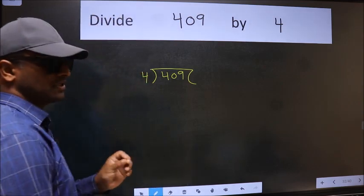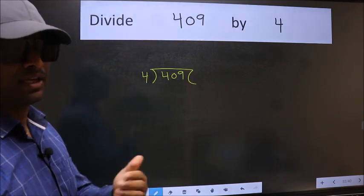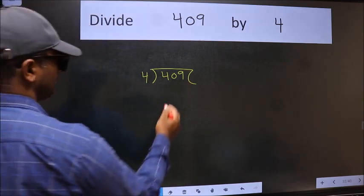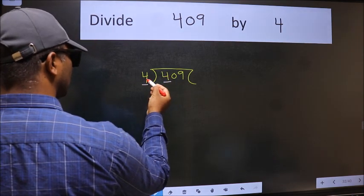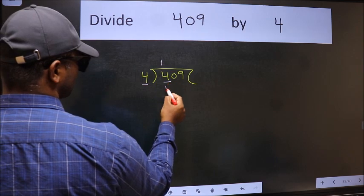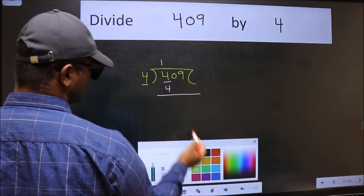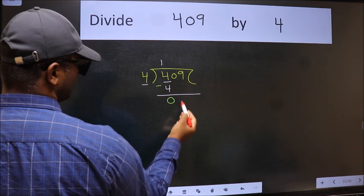This is your step 1. Next, here we have 4, here also 4. When do we get 4 in 4 table? 4 once 4. Now we should subtract. We get 0.